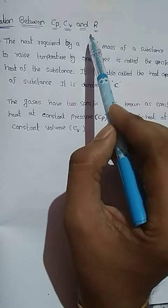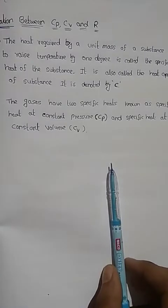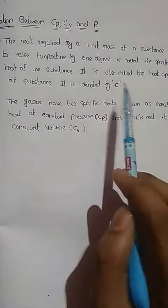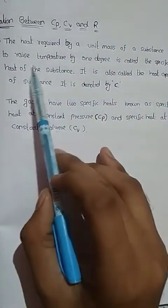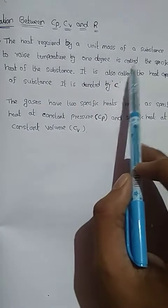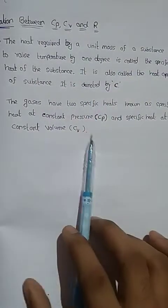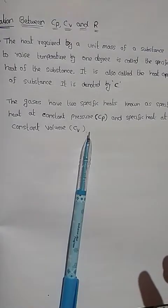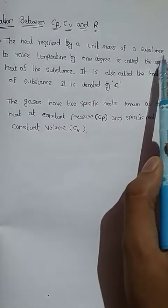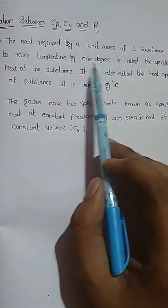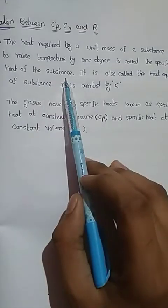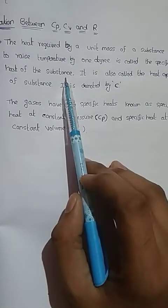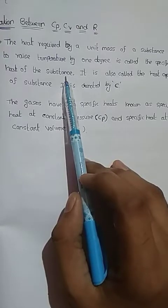First of all we would like to know about what specific heat is. The specific heat is the heat required by a unit mass of a substance to raise its temperature by one degree. For example, taking water — the heat required to raise water's temperature by one degree is called the specific heat of water. Similarly, we have the specific heat of oil and the specific heat of lubricant.